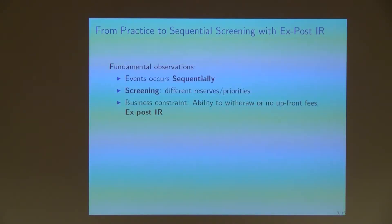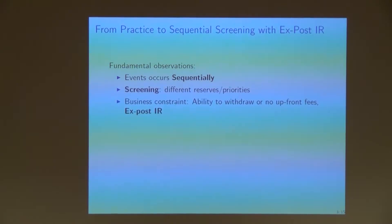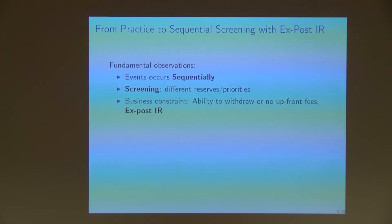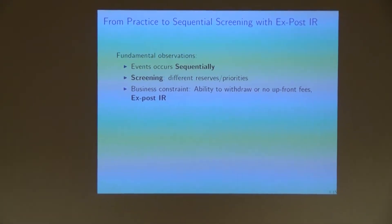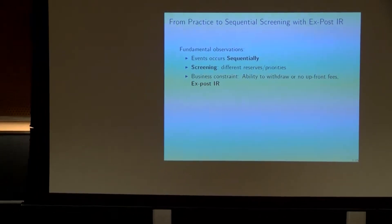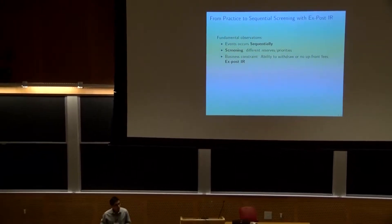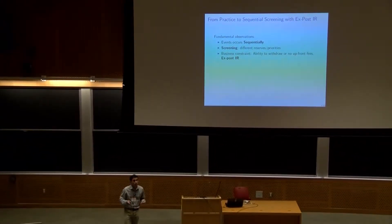We make three fundamental observations about these mechanisms. First, they work sequentially. The second is that there is room for screening — in our waterfall auction story, buyers had to decide among different auctions with different priorities and reserves, so they were screened. The third observation is that there is a business constraint relating to exposed IR: in online shopping it gave the buyer the ability to withdraw, and in waterfall auctions there were no upfront fees and second-price auctions were used.